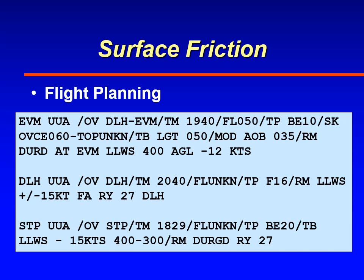At Eveleth, an airplane flying from Duluth reported light turbulence at 5,000 feet and moderate at or below 3,500 feet. During descent at Eveleth at 400 feet, they lost 12 knots of airspeed. At Duluth, an F-16 landing experienced low-level wind shear of plus or minus 15 knots on final approach to runway 27. At St. Paul, an urgent pilot report from a King Air 200 reported low-level wind shear — lost 15 knots from 300 to 400 feet during descent to runway 27.